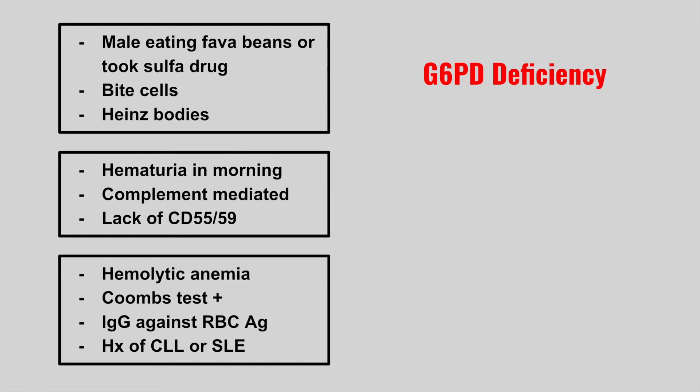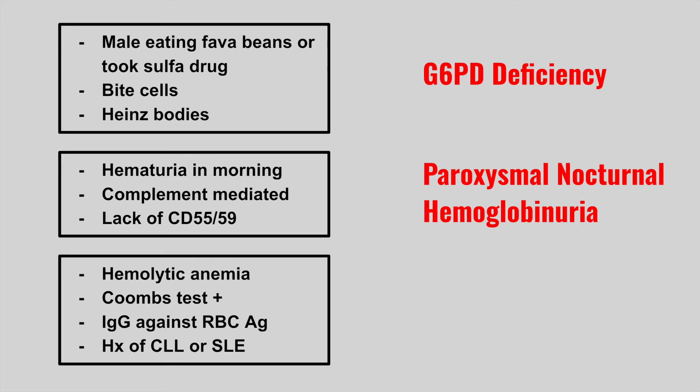The next patient is going to have hematuria in the morning — it's a complement-mediated issue with a lack of CD55 and CD59. This is paroxysmal nocturnal hemoglobinuria (PNH).